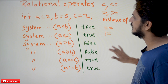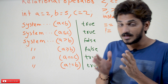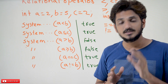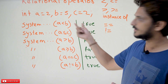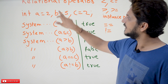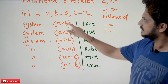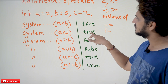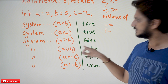Let's take int a equal to 2, b equal to 5, c equal to 2. System.out.println of a less than b — we are checking the relation between two operands. a is 2, b is 5. Is 2 less than 5? Yes, it is true, so it is going to display true. a less than or equal to c — 2 less than or equal to 2, the equal condition satisfies, so output is true. a greater than b — 2 greater than 5? No, so it displays false. a greater than or equal to b — also false.